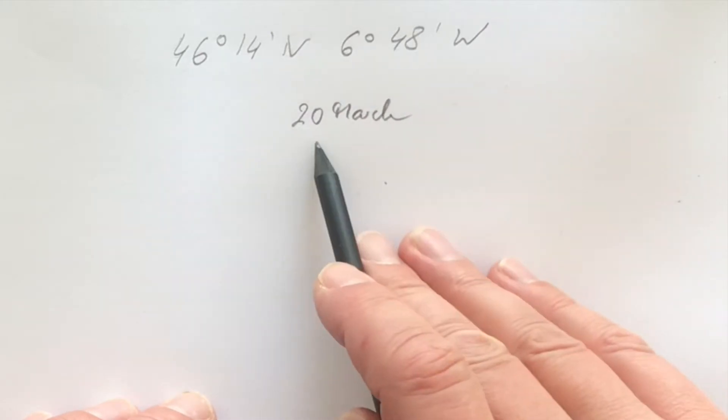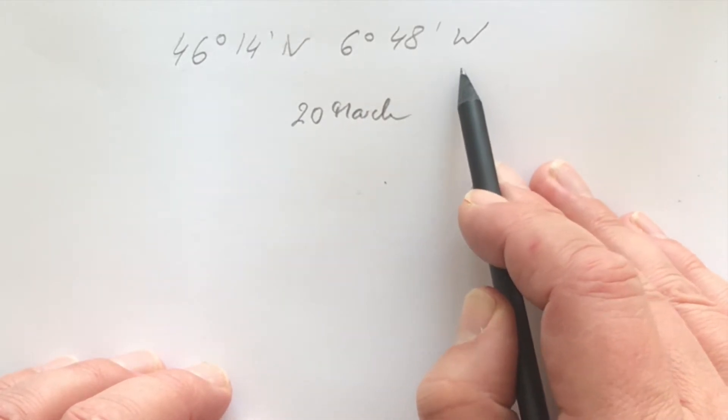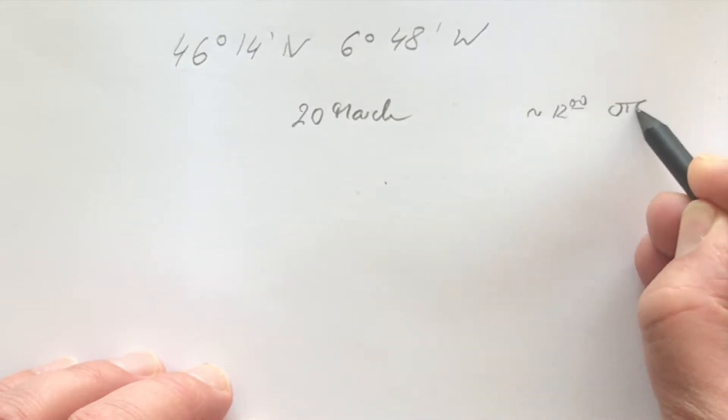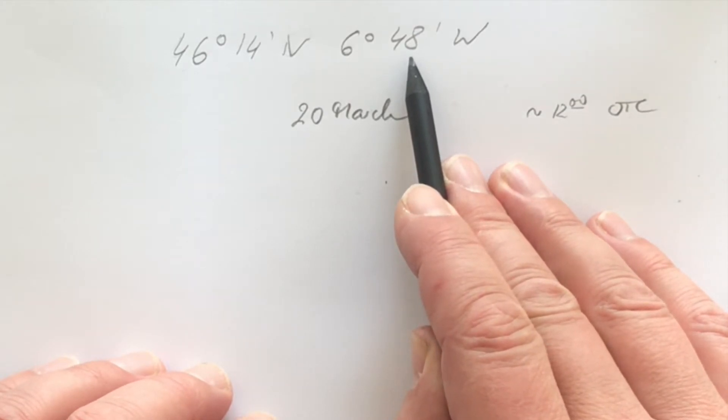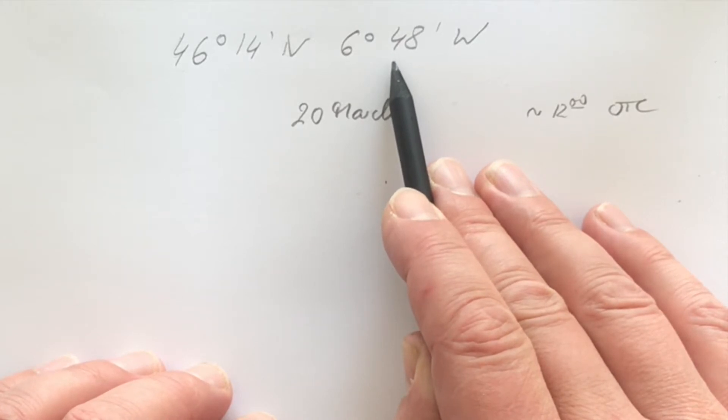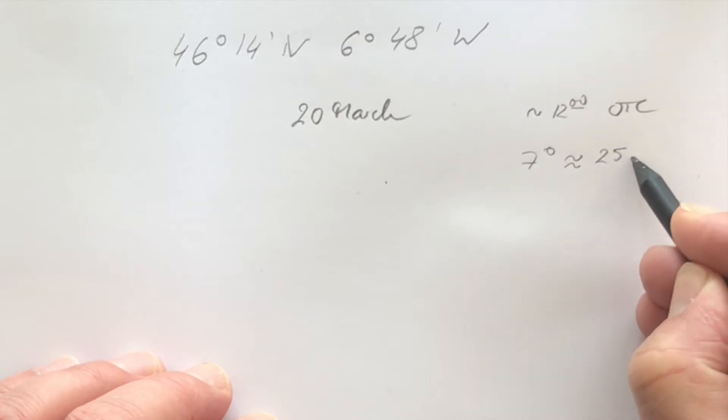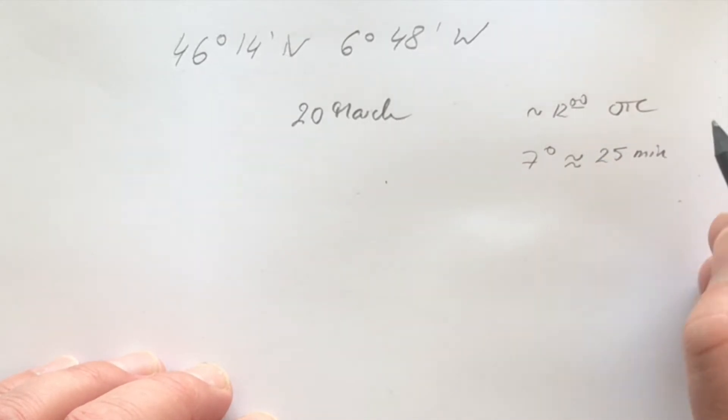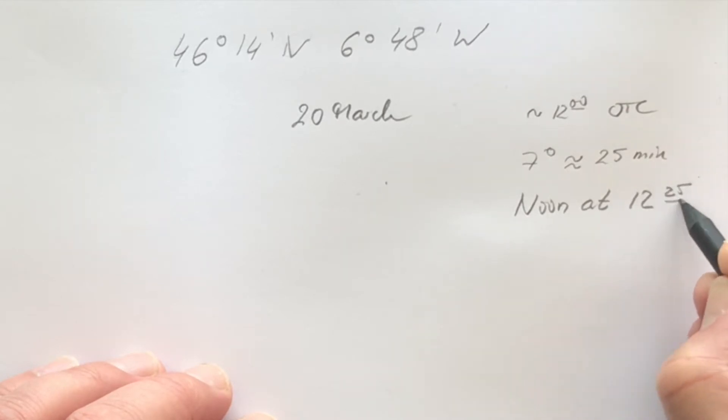We can approximately say it already by eyeball navigation. Noon in Greenwich is approximately 12 o'clock UTC, and we are approximately 7 degrees west. 15 degrees takes an hour, so 7 degrees is a bit less than half of that, approximately 25 minutes. This means we should have noon at 12:25 UTC.